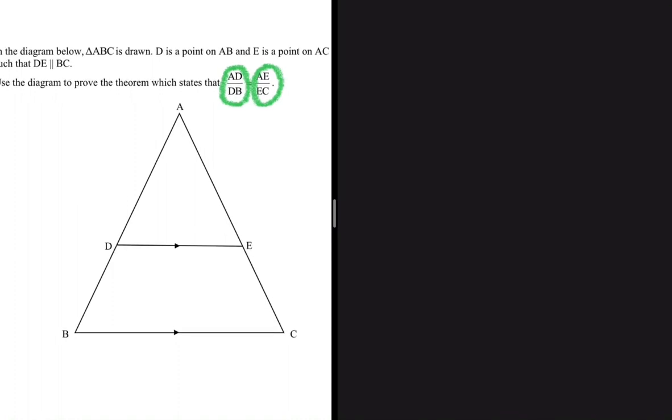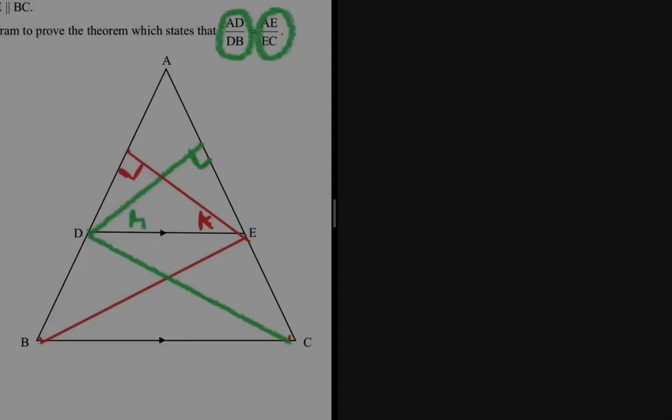What's step number one? Construction. We need to join DC, BE and F perpendicular heights K and H. Your triangles don't have to be color-coded like mine. I'm just doing that for the sake of clarity. So step number one is done.